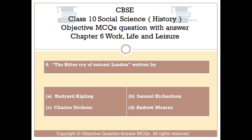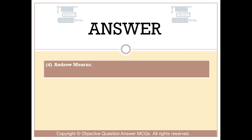Question number 8: 'The Bitter Cry of Outcast London' was written by — Option A: Rootyard Kipling. Option B: Samuel Richardson. Option C: Charles Dickens. Option D: Andrew Mearns. The right answer is Option D: Andrew Mearns.